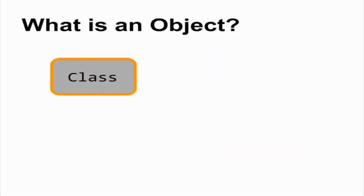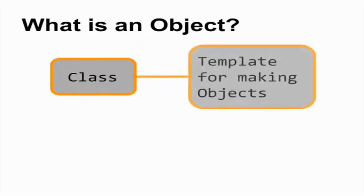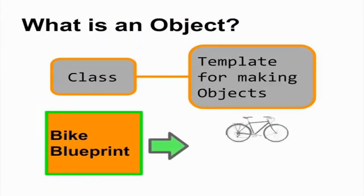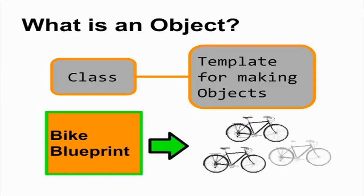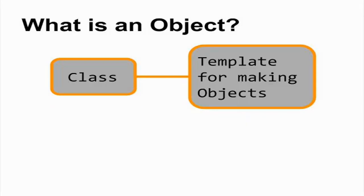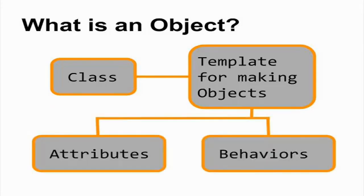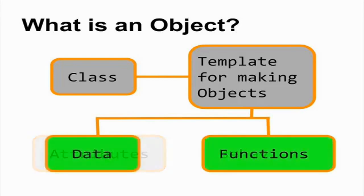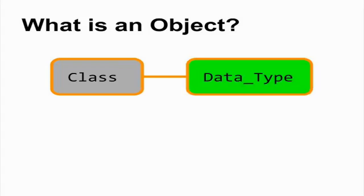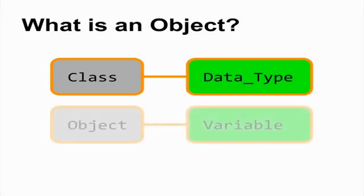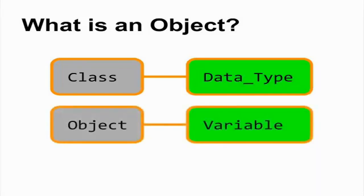In object-oriented programming, a class is a template for creating objects. The template is a particular set of attributes and behaviors. Objects implement these attributes as data and behaviors as functions. A class is a data type and an object is a variable of that class.